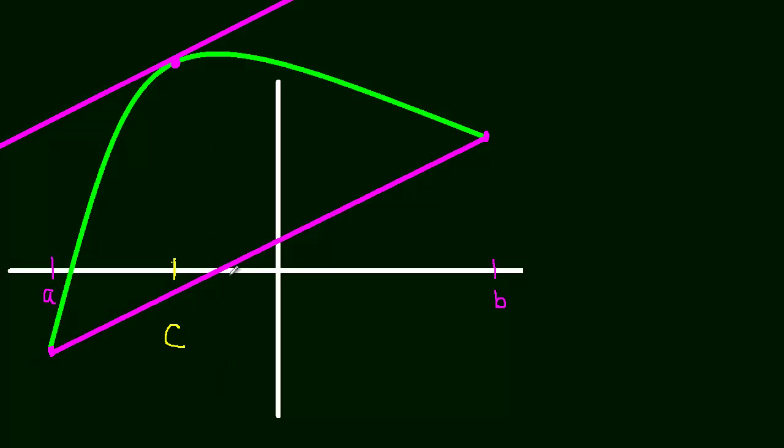So hopefully, just intuitively, just looking at it, that makes sense, that that would be true. But now let's look at it in terms of notation, what it would say. So the slope at C, another way that we can write that is just saying the derivative at C.